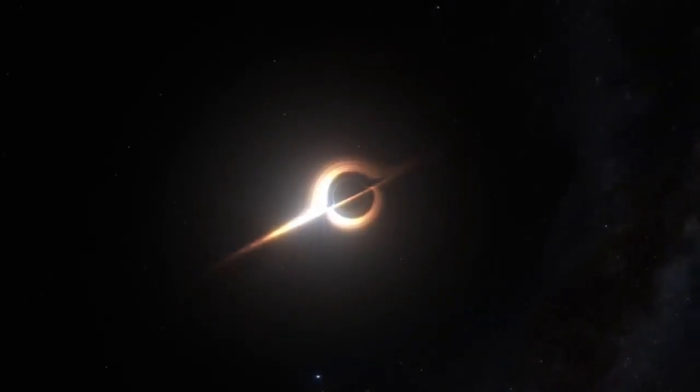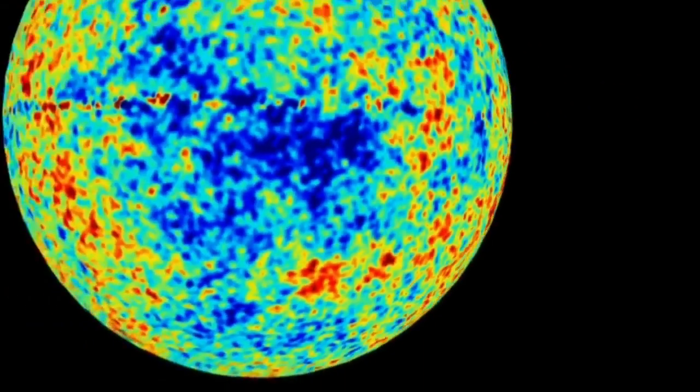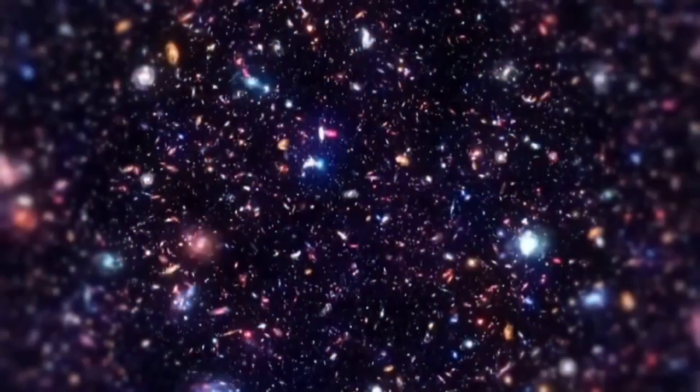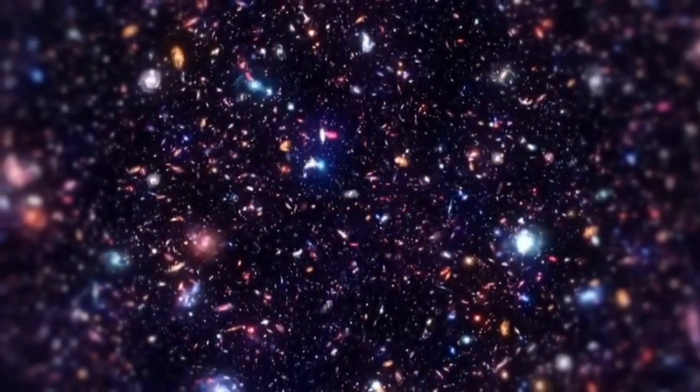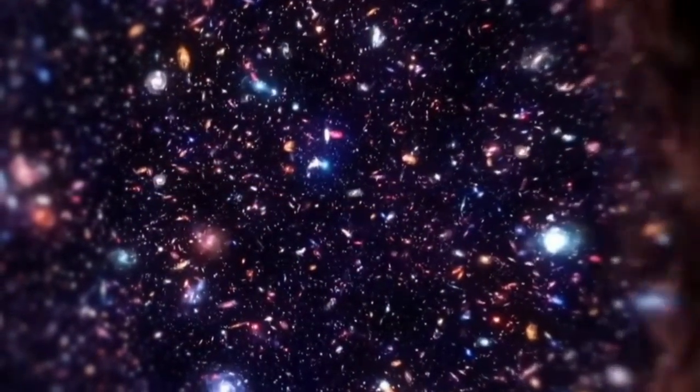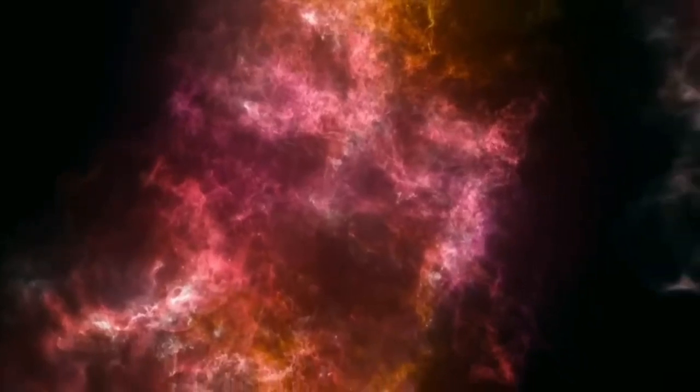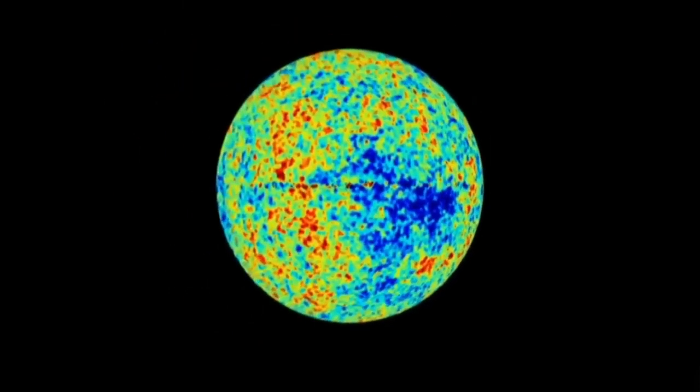In 1927, a Belgian priest and astronomer named Georges Lemaître proposed the theory of the Big Bang. According to the theory, the universe began as a singularity, a single point that was extremely hot, dense, and full of energy. This singularity then rapidly expanded and cooled, resulting in the formation of subatomic particles and eventually atoms. Matter began to clump together as the universe expanded, forming clouds of gas and dust that eventually became stars and galaxies.